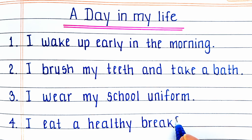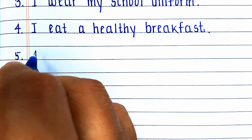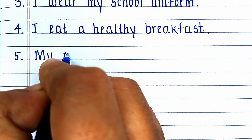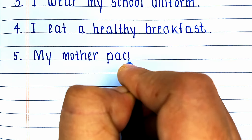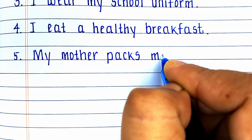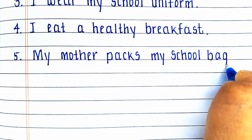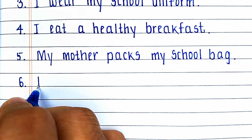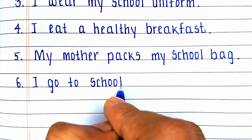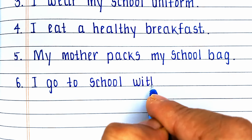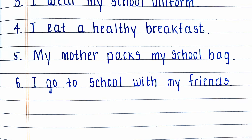Fourth line is: I eat a healthy breakfast. Fifth line is: my mother packs my school bag. Sixth line is: I go to school with my friends.